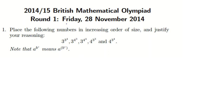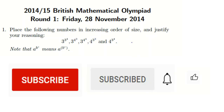In this video, we are going to solve BMO Round 1, British Mathematical Olympiad 2014-15, problem number 1. Place the following numbers in increasing order of size and justify your reasoning: 3 to the 3 to the 4, 3 to the 4 to the 3, 3 to the 4 to the 4, 4 to the 3 to the 3, and 4 to the 3 to the 4.